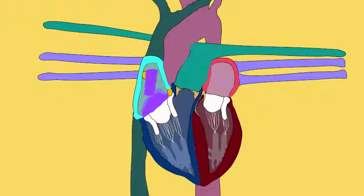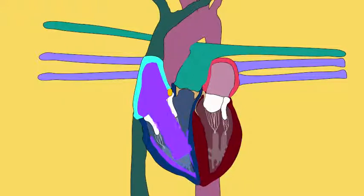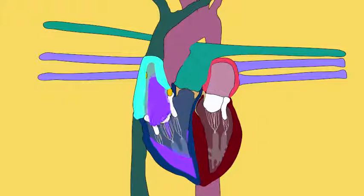This deoxygenated blood empties into only one of the four chambers of the heart, the right atrium. The right atrium receives this deoxygenated blood, and when it contracts, it sends this blood into the right ventricle.